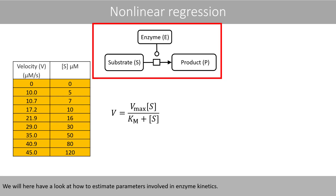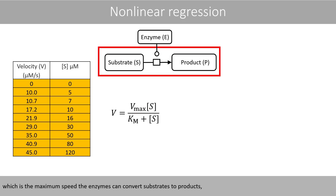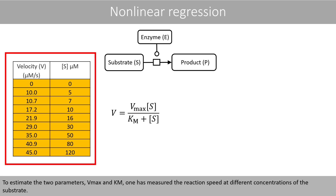We'll have a look at how to estimate parameters involved in enzyme kinetics. The parameter Vmax is the maximum speed of the reaction, which is the maximum speed the enzymes can convert substrates to products. And Km is the Michaelis-Menten constant, which defines the substrate concentration that results in half maximum speed of the reaction. To estimate the two parameters, Vmax and Km, one has measured the reaction speed at different concentrations of the substrate.